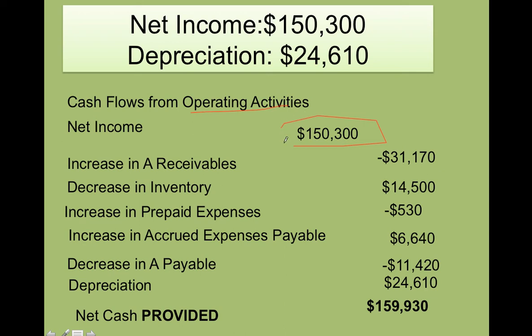You start with the net income. Then after that, you're going to do the adjustments — remember the increase of accounts receivable, the decrease of inventories, and all of this. And finally, you need to add up the depreciation. Remember, depreciation is cash that you don't see, but you actually subtracted the depreciation before as an expense, so you need to add it up again. That's going to give me a positive amount. Because it's positive, that means this is net cash provided. If this amount was negative, which could happen sometimes, that means you used that cash from the operating activities.